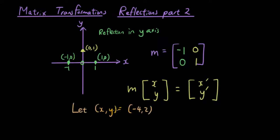I have just assigned a random point x and y is negative 4, 2. Let me draw that on the Cartesian plane.